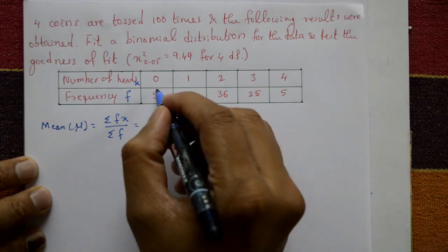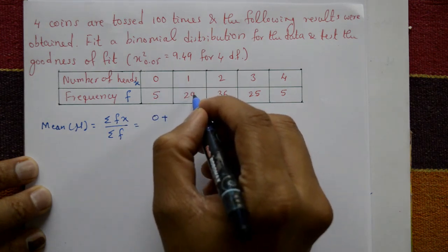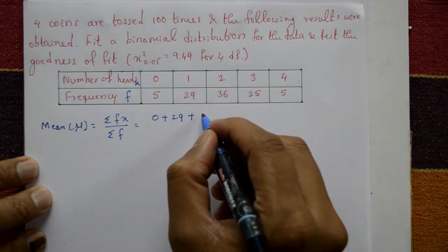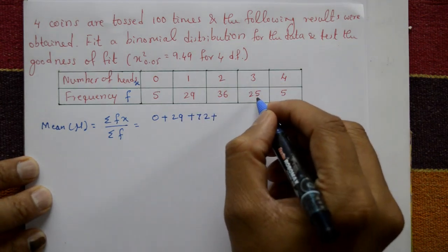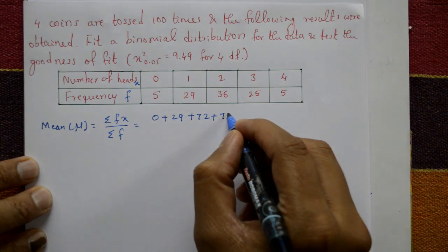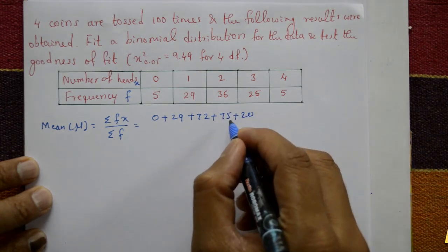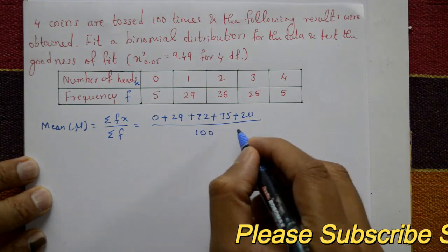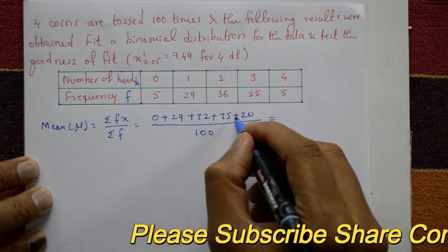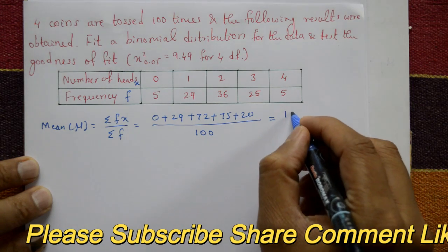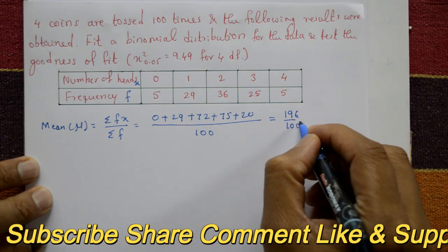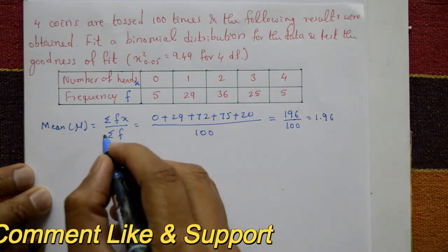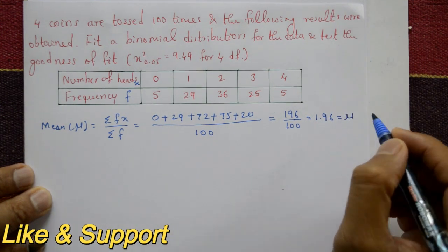Computing the mean: 0 times 5 is 0, plus 1 times 29 is 29, plus 2 times 36 is 72, plus 3 times 25 is 75, plus 4 times 5 is 20. Divided by summation f which is 100. The numerator adds up to 196, so 196 divided by 100 equals 1.96. Thus mu, the mean, equals 1.96.